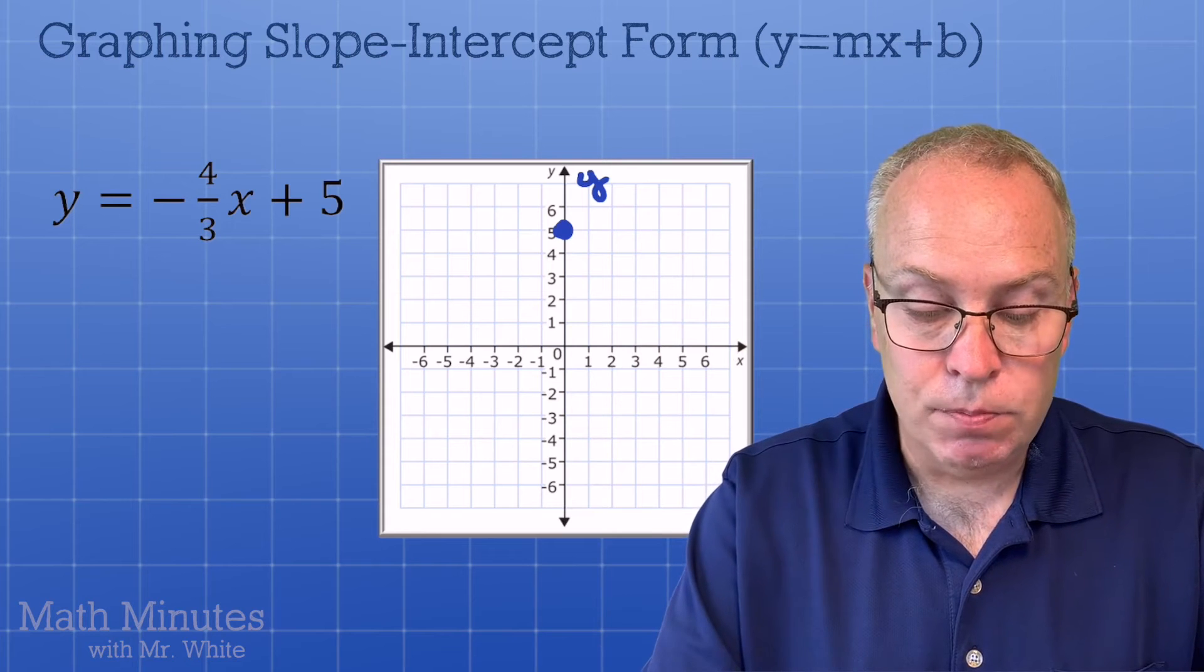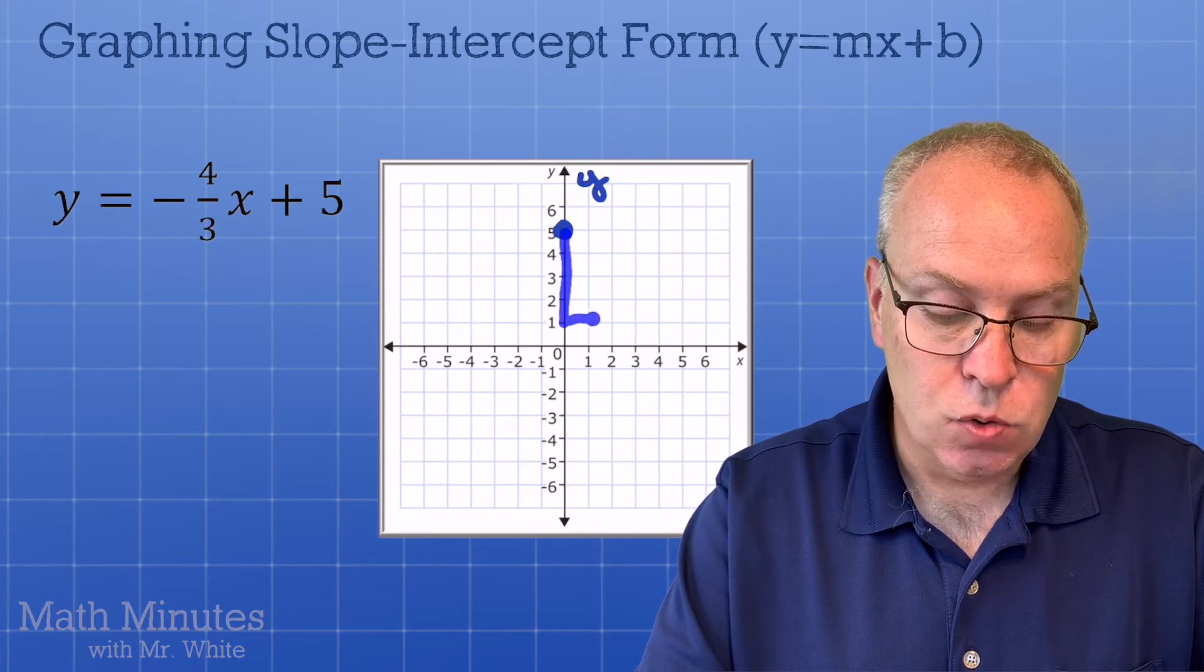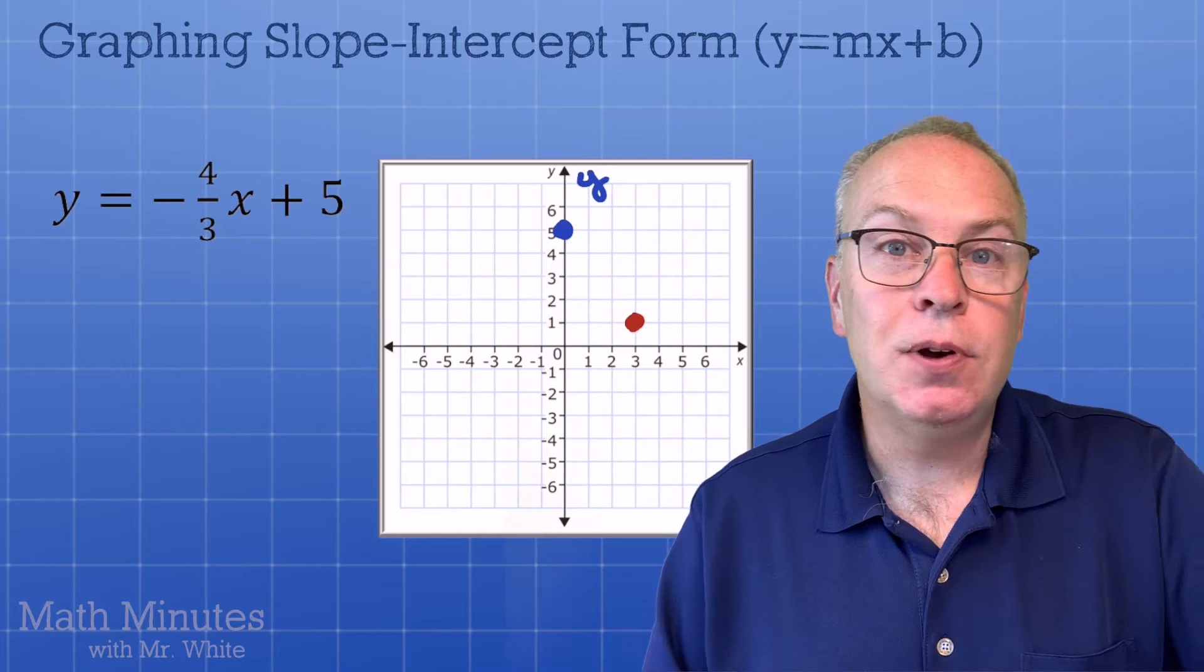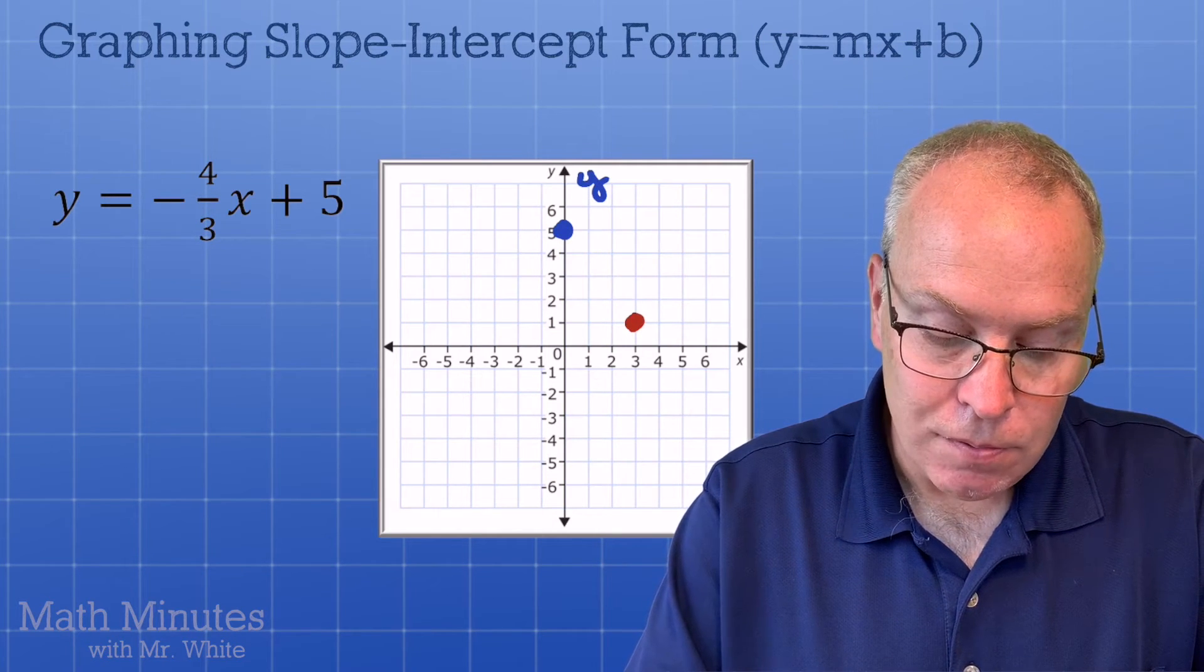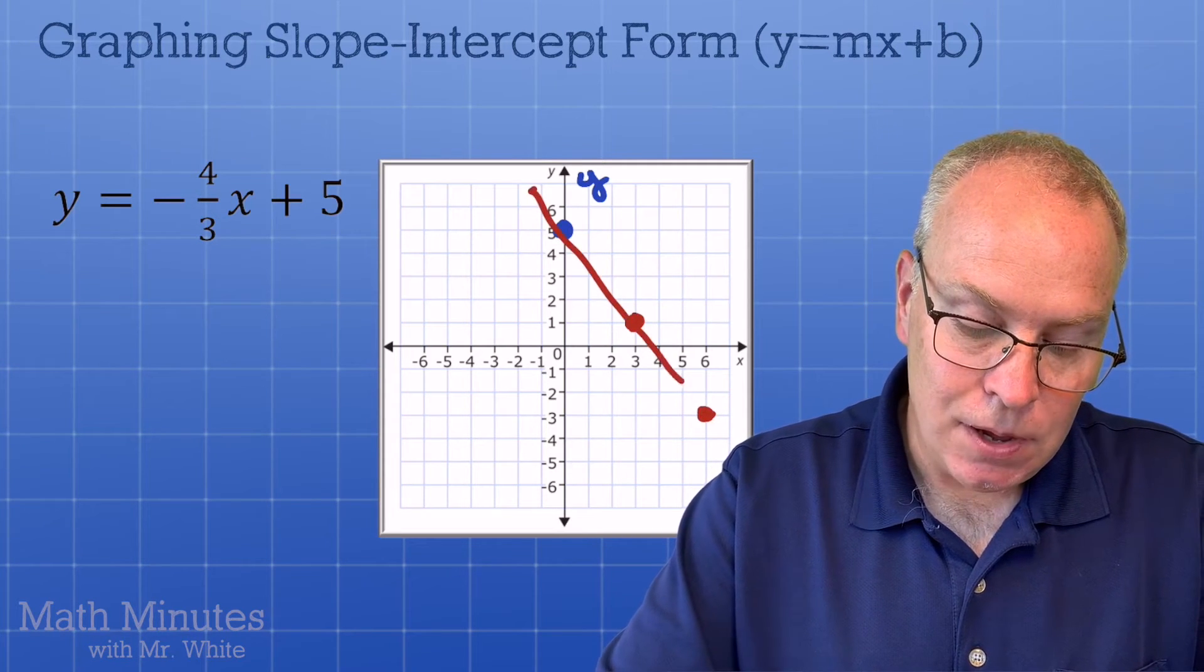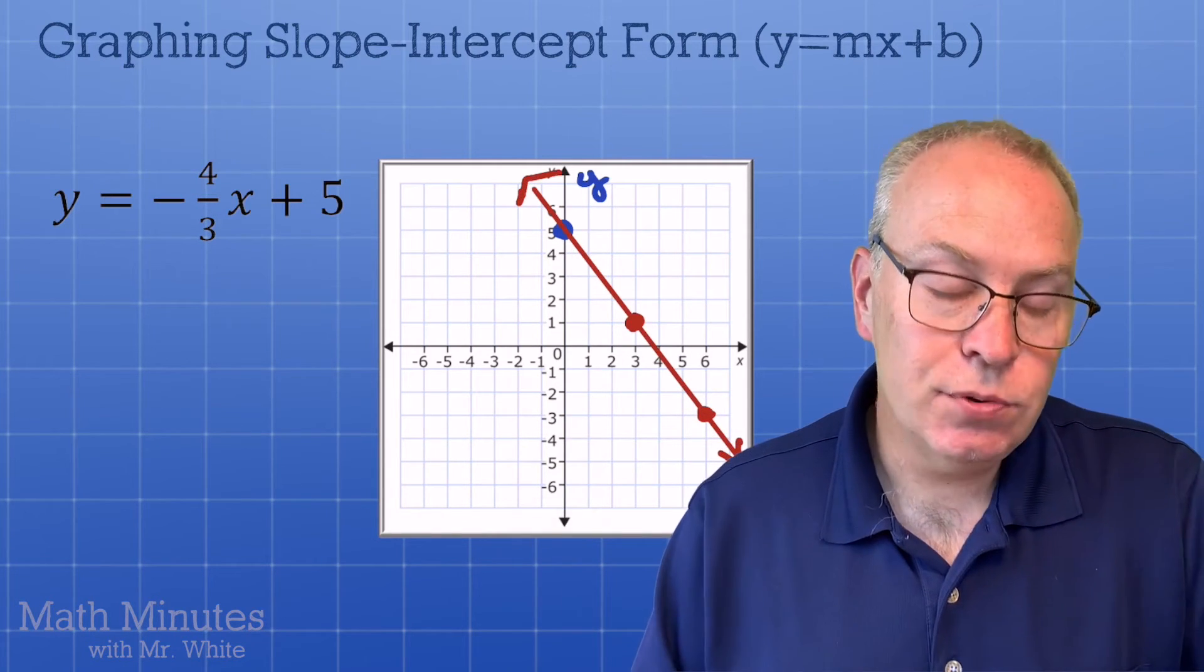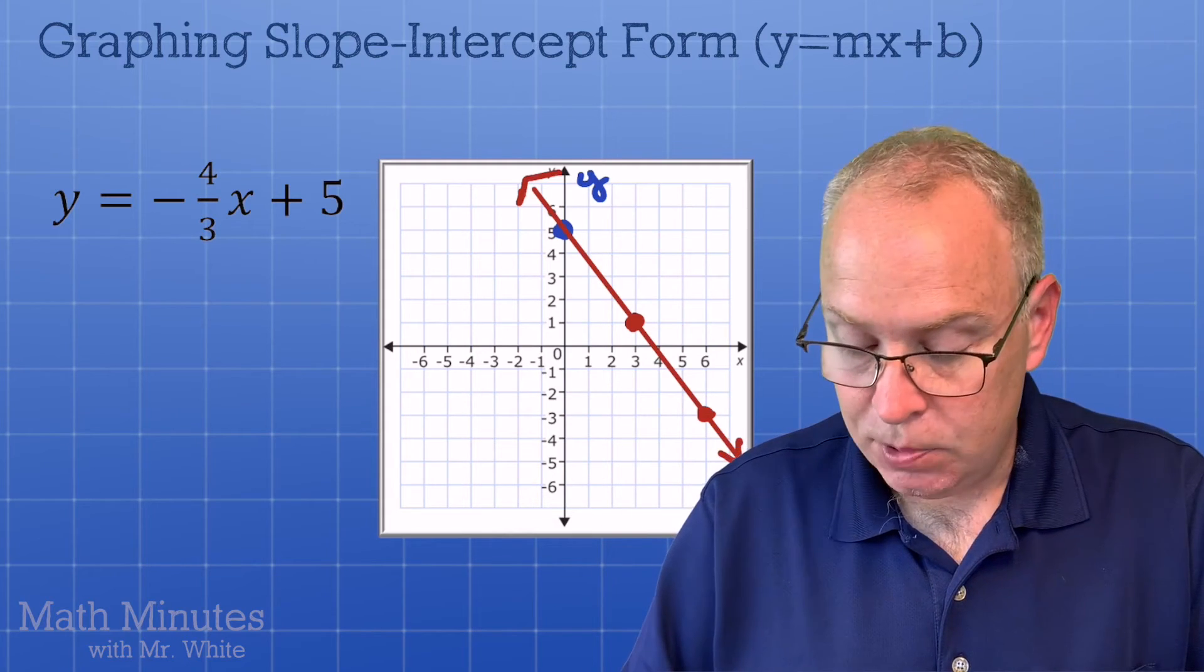Now the second dot, we have to be careful. This is a negative slope, so I need to go down four to the right three. Remember, always go to the right if you want to be right. I know that's silly, but it helps, right? Down four over three. I've got three dots nicely lined up. I'm going to go ahead and draw my line, put my arrows on the end. There's my linear function, y equals negative four-thirds x plus five. I've got two more examples lined up for you.